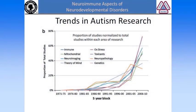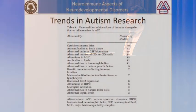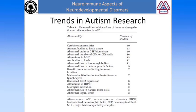If we look at the proportion of total studies published per year, we can see the areas that have gained the most traction include immune dysregulation and investigations of toxicant exposure. In our review, we looked at the different abnormalities reported in immune dysregulation and the number of studies. Most of the papers include cytokine abnormalities, autoantibodies to brain tissue, biomarkers in the CSF, abnormalities in CD4 and CD8 cells, major histocompatibility complexes, antibodies to foods, and abnormalities in immunoglobulins.